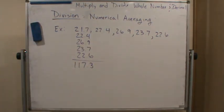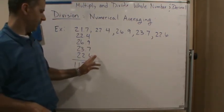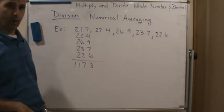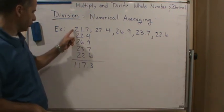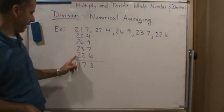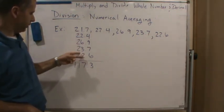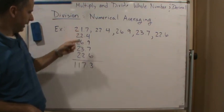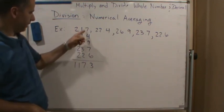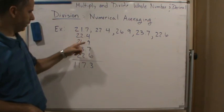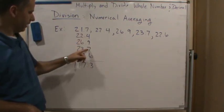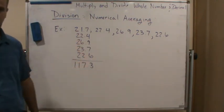We get 117.3. Okay, so all I did again, I just added left to right. So that's 20, 40, 60, 80, 100, and then 111, 114, and then 115.1, 116, 117.3. And I'm done.